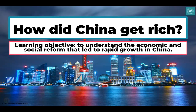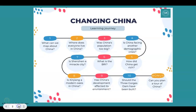Hello geographers and welcome to another lesson from the Changing China Unit. In this lesson we're going to answer this question: how did China get rich? The main focus is really to understand the economic and social reforms that have led to the rapid growth that we've seen in China. This lesson is number five in the Changing China Unit. We've done quite a lot about the changing population, so now we're really going to focus on the economy.